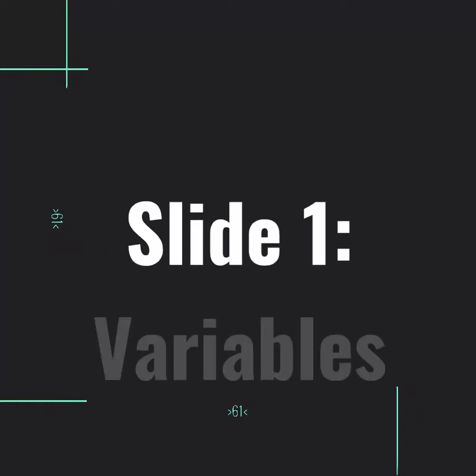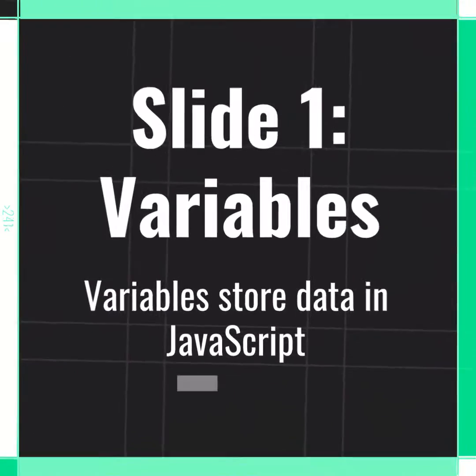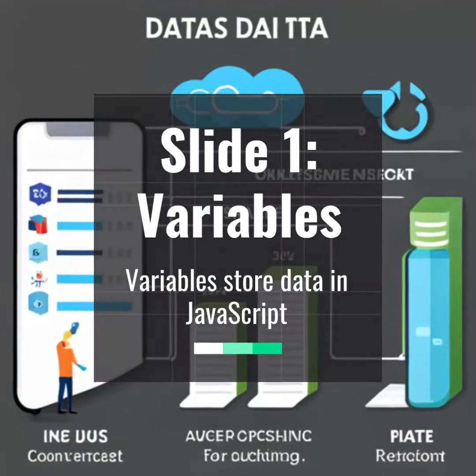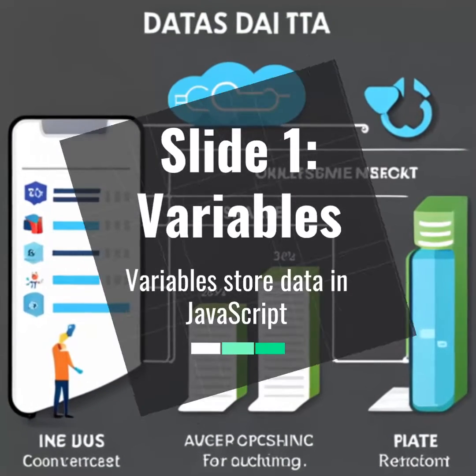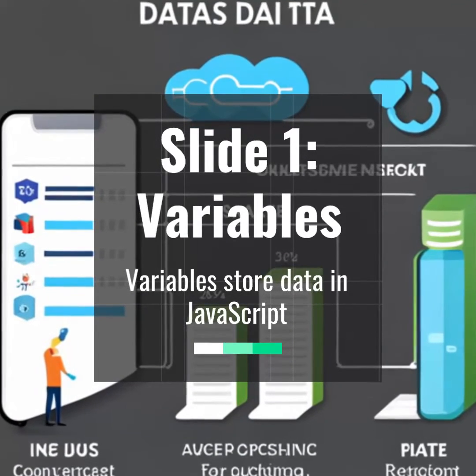Variables are like containers that hold different types of data. They allow us to store and manipulate information in our programs.